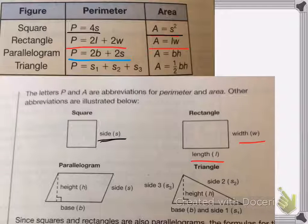Parallelogram is 2 times the base plus 2 times the side for the perimeter, and the area is base times height.